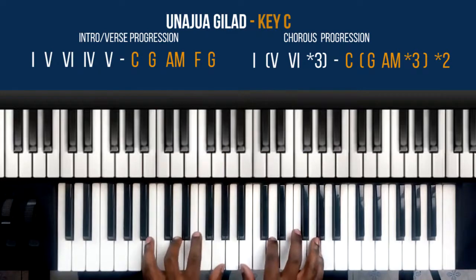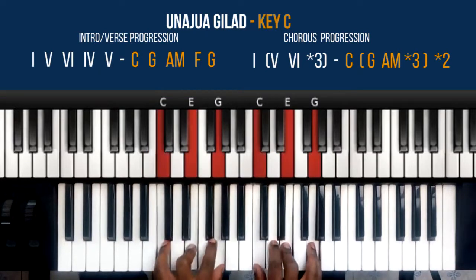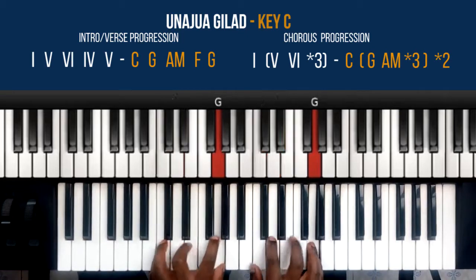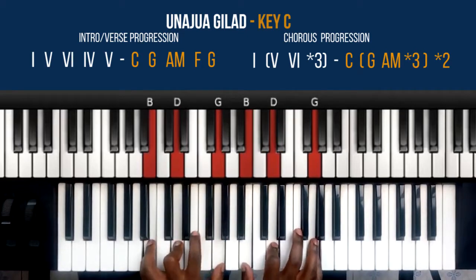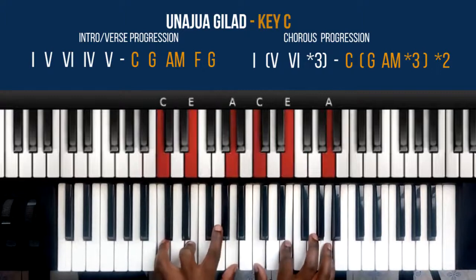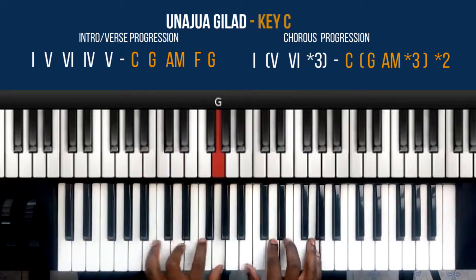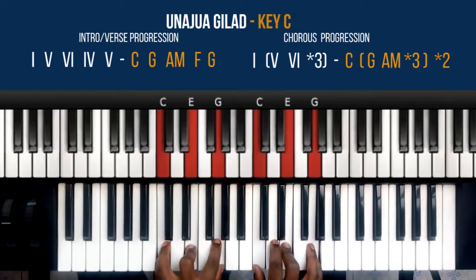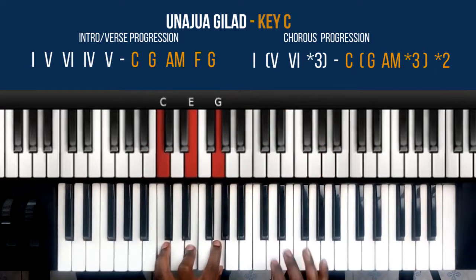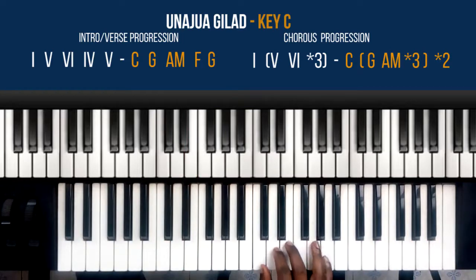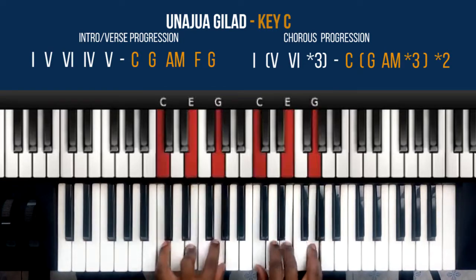And then you play G again, and then 1. So ideally it's... so that's the progression for the intro and the verse. The intro is that progression times two, then the verse uses that progression, and then the chorus comes in.